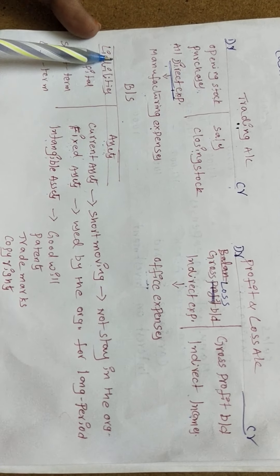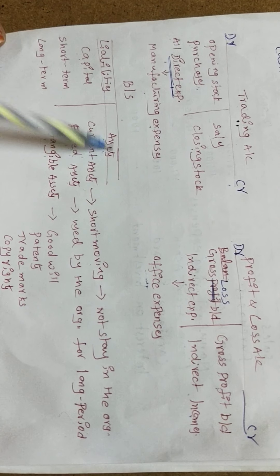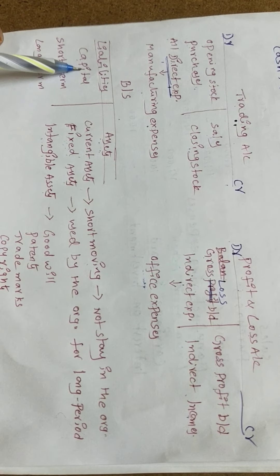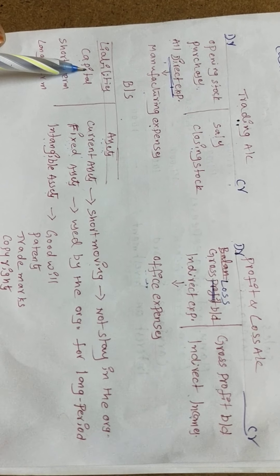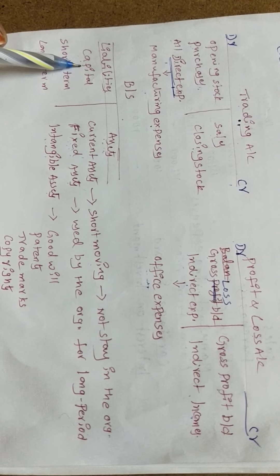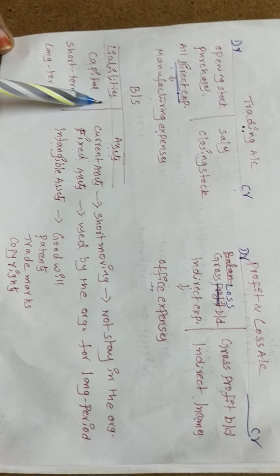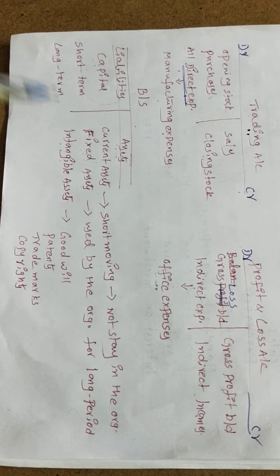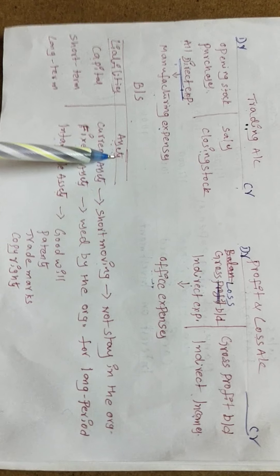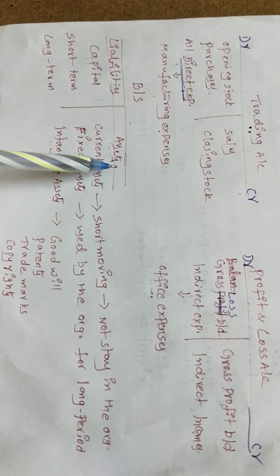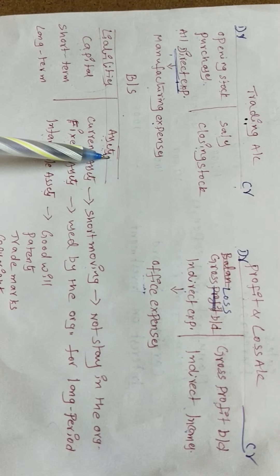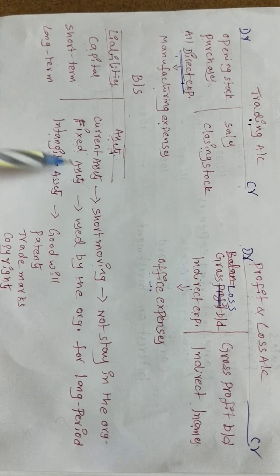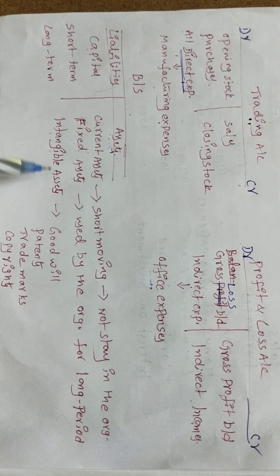On the left-hand side of the balance sheet we record liabilities and capital. Liabilities include short-term liabilities and long-term liabilities. On the right-hand side we record assets, which include current assets, fixed assets, and intangible assets.